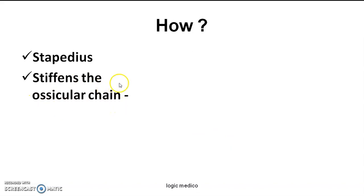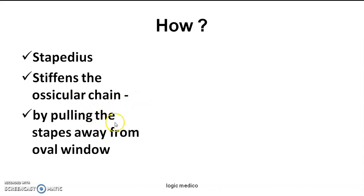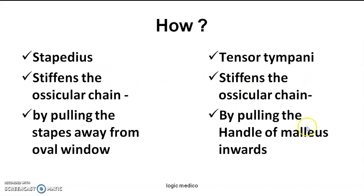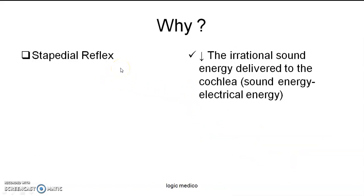How does this reflex work? The stapedius muscle stiffens the stapes and ultimately stiffens the entire ossicular chain, pulling the stapes away from the oval window. Tensor tympani stiffens the ossicular chain by pulling the malleus inward, making the tympanic membrane tense — hence the name tensor tympani. The stapedial reflex is present in the human body because whenever excess sound energy is delivered, the inner ear can get damaged without such a reflex. Therefore, this muscle contracts to prevent extra sound energy from reaching the inner ear, making stapedial reflex a protective reflex that protects the inner ear — the organ of hearing and equilibrium.